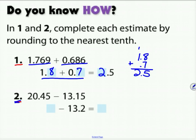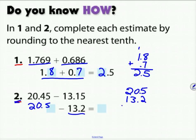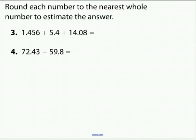For problem two: 20.45 rounds to 20.5, and subtracting 13.2 from 20.5, you borrow and regroup, getting 7 and 3 tenths. Now try completing problems three and four — round each number to the nearest whole number and estimate the answer. Pause the video.